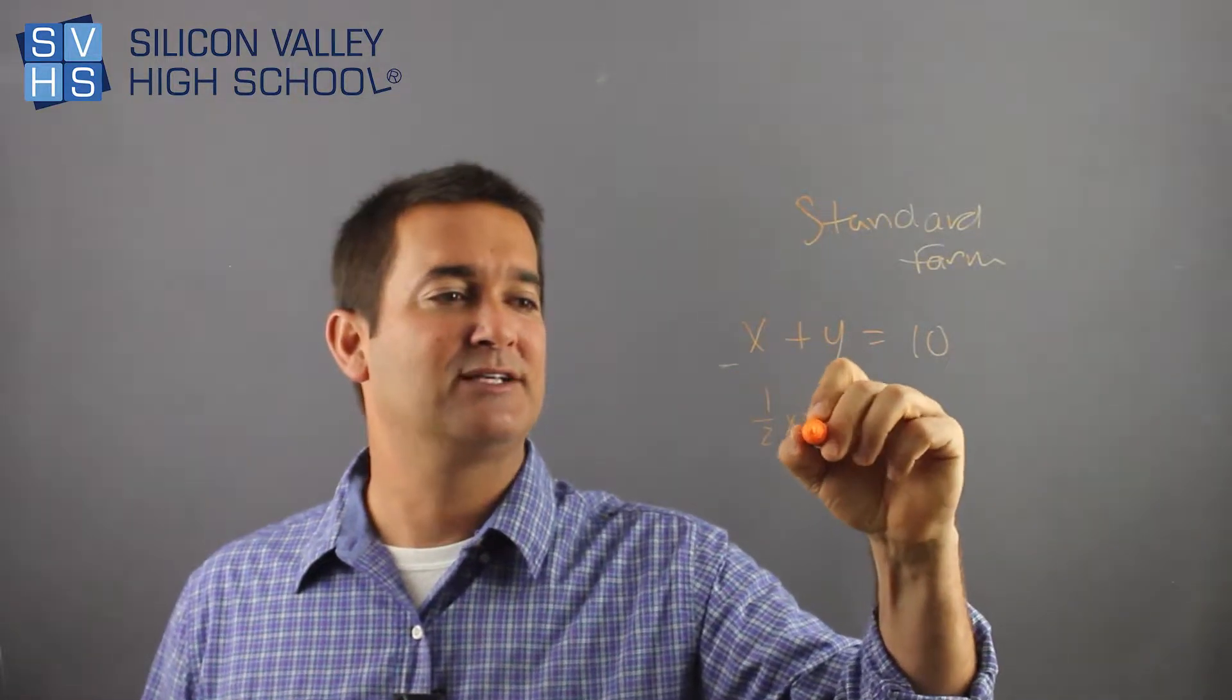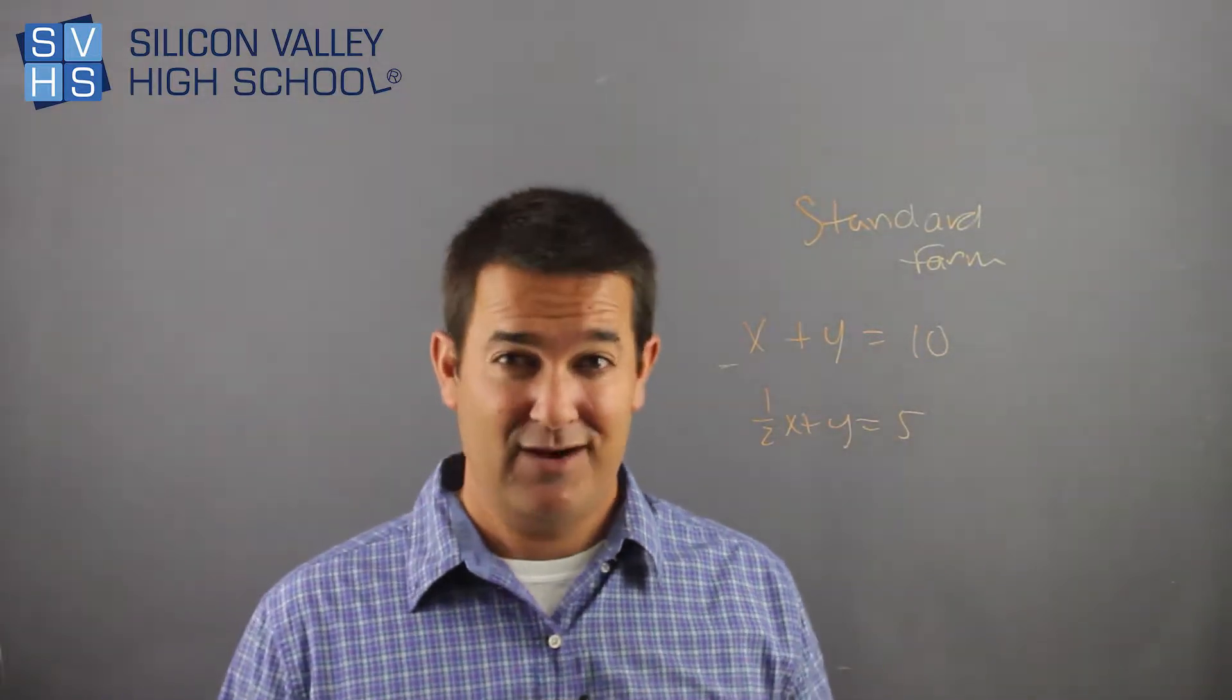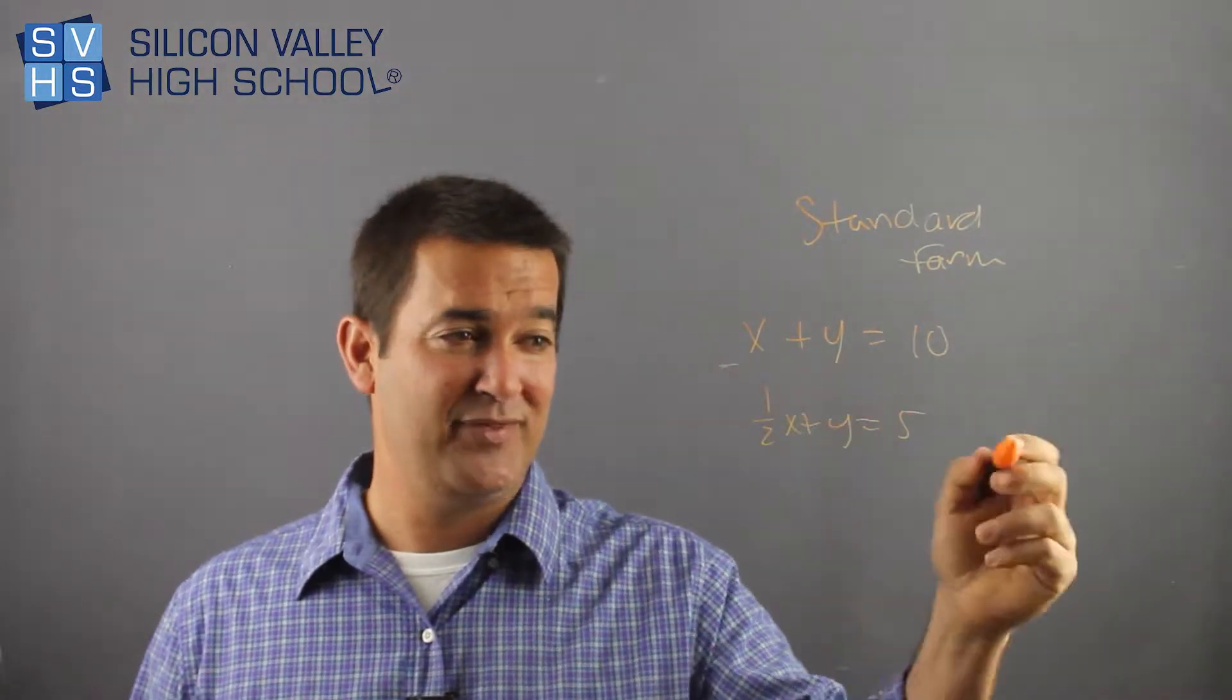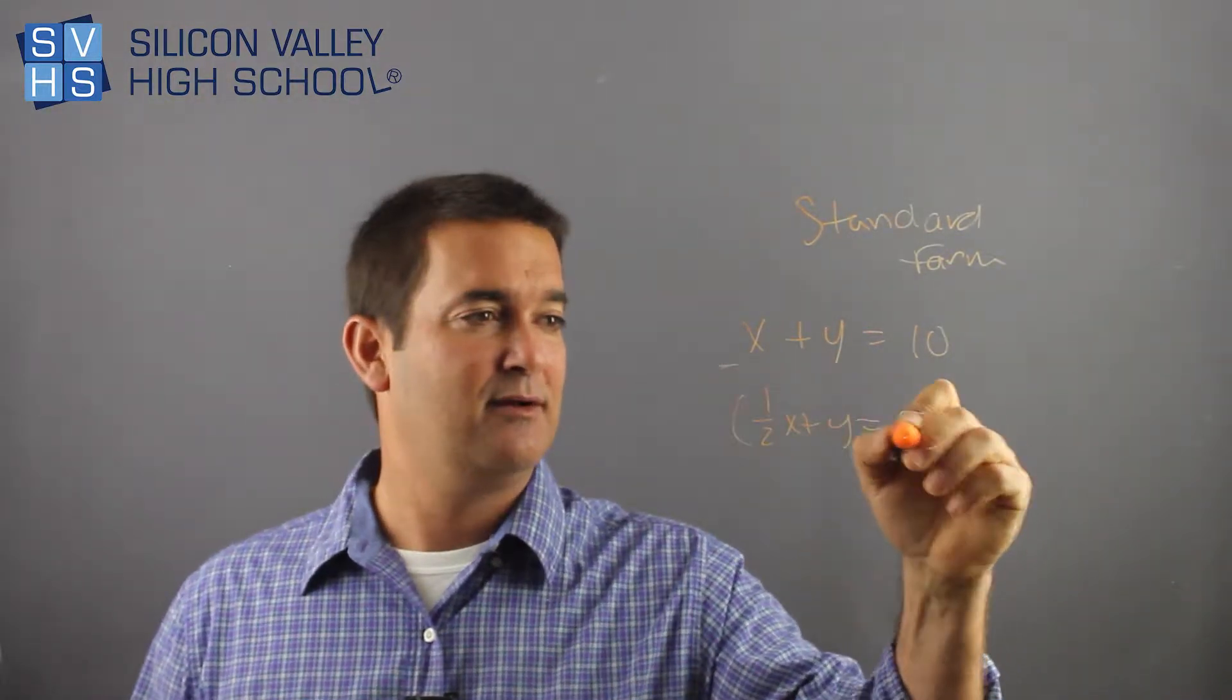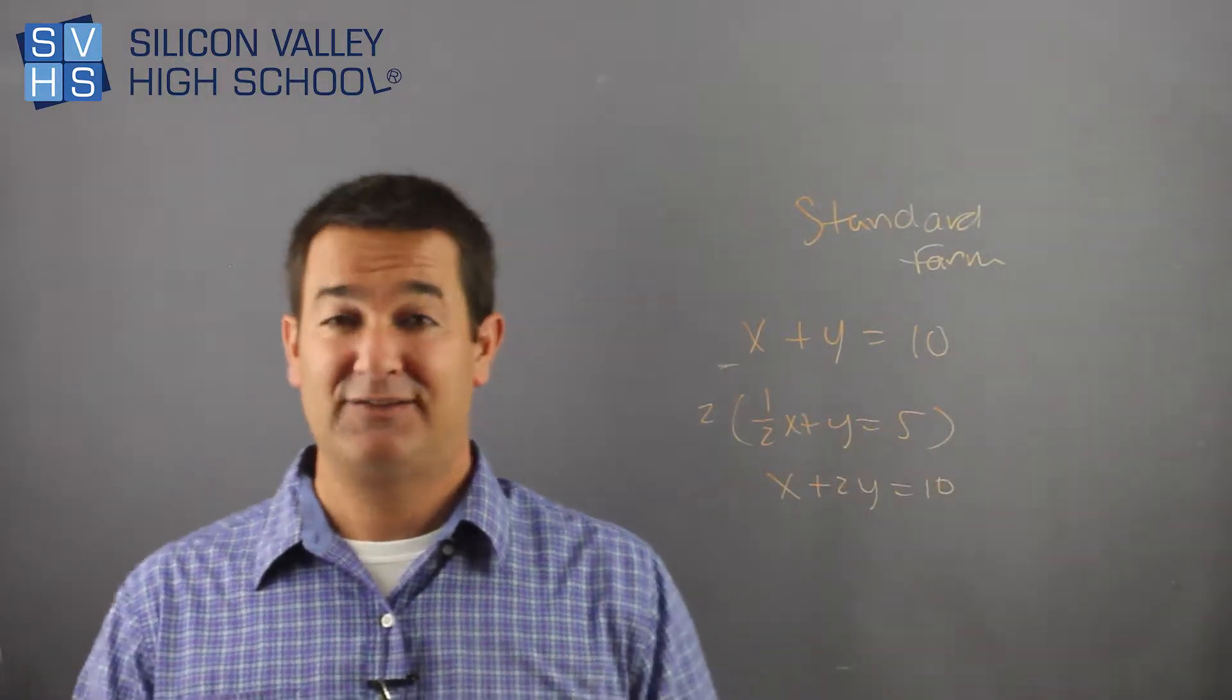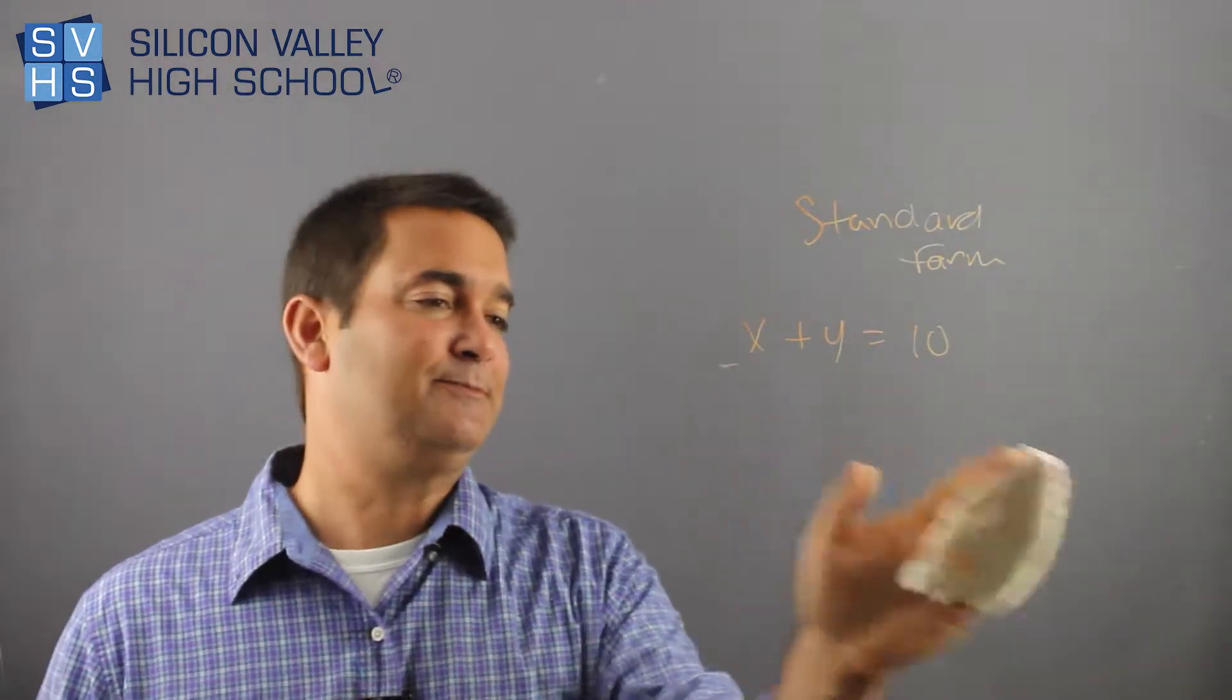So if you had something like half x plus y equals five, wrong. That is totally not standard form. You would have to remedy this half by multiplying the whole problem by two. So then I would have one x plus two y equals ten. That is fine, that's standard form. So no negatives, no fractions.